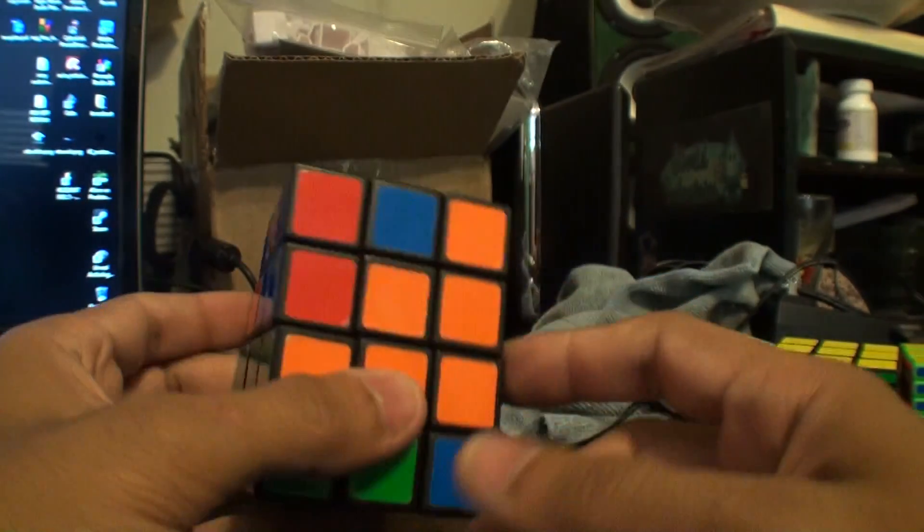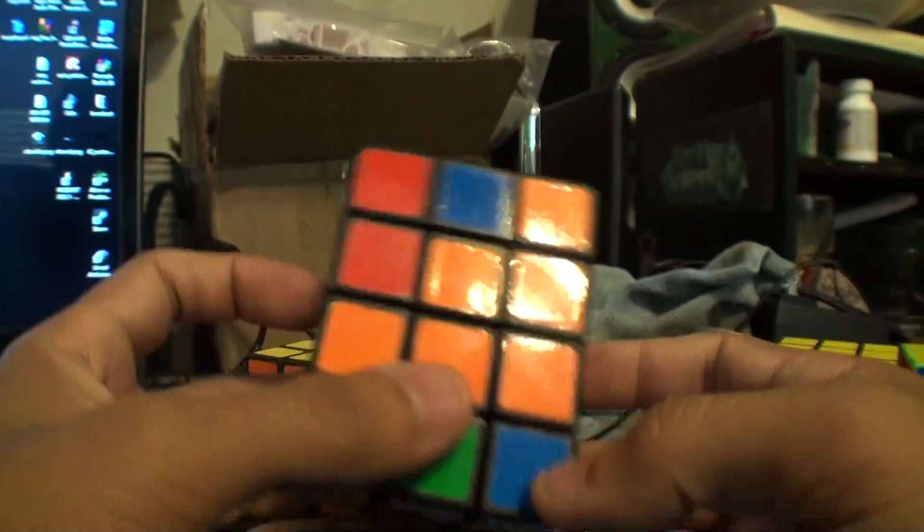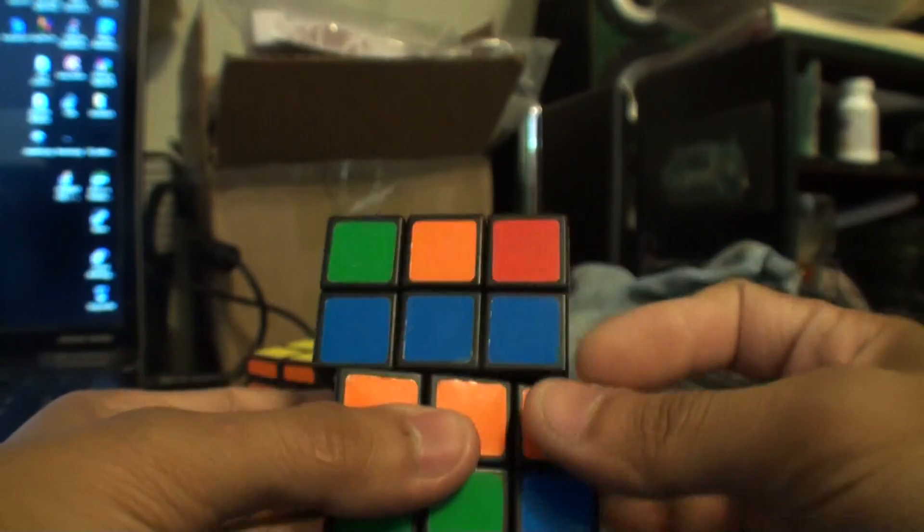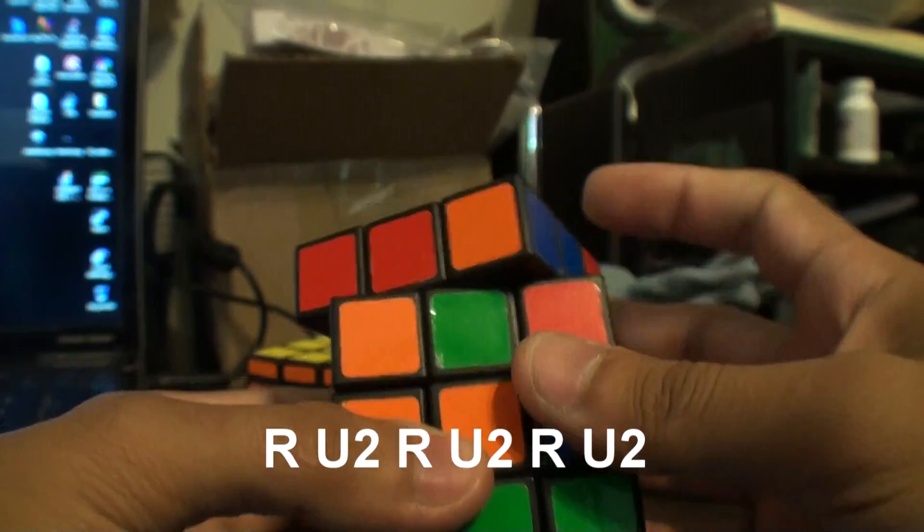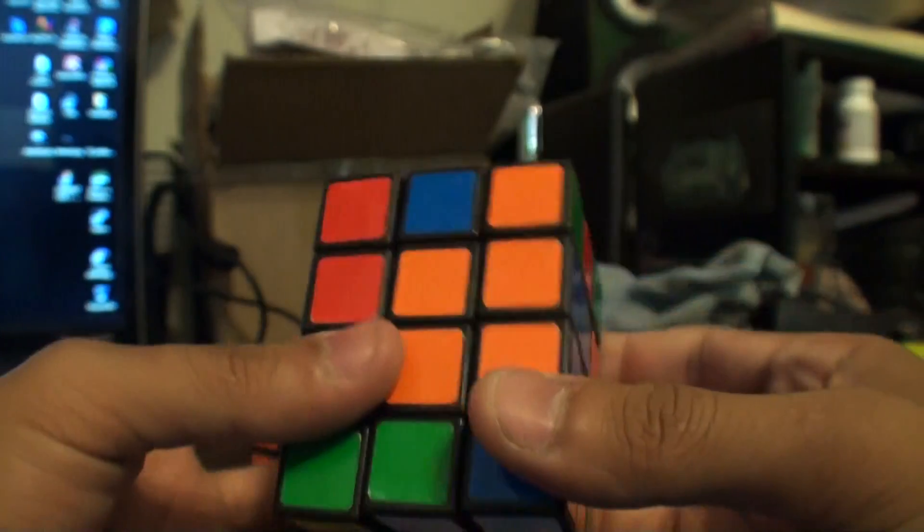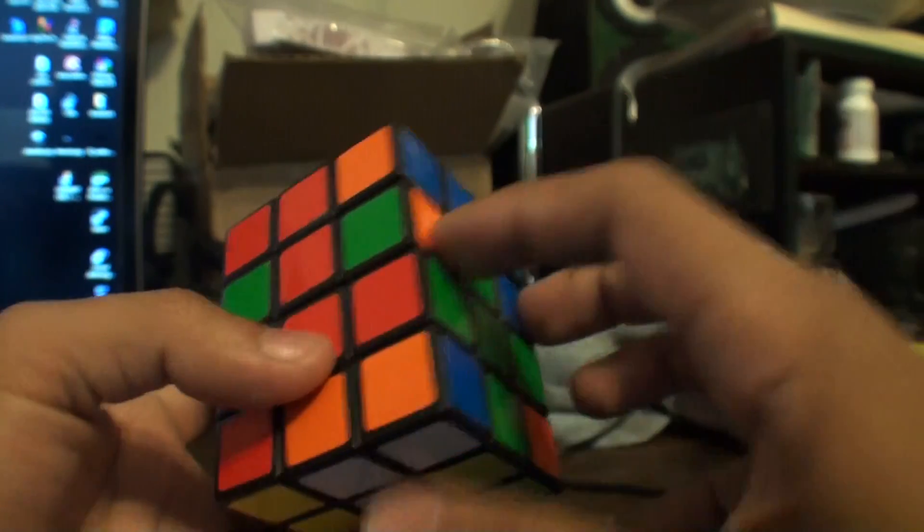And it should have swapped these two. And it did because I got my piece here that I wanted. Now I notice these two edges got messed up. So we're going to fix that with the algorithm that we know.